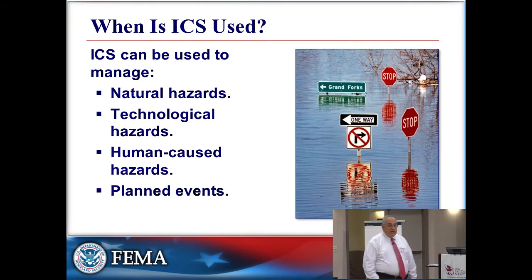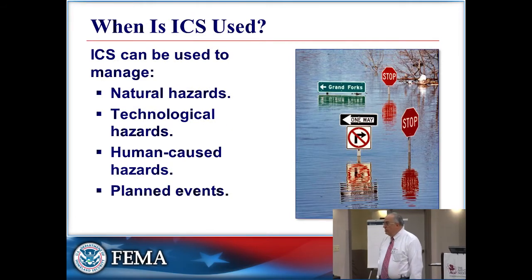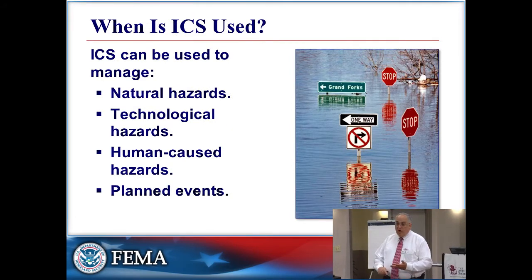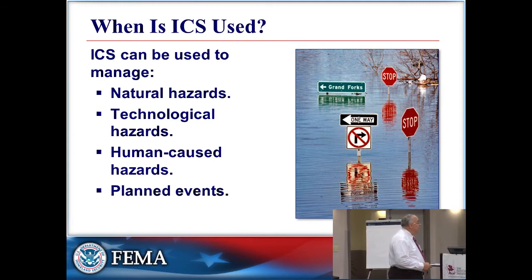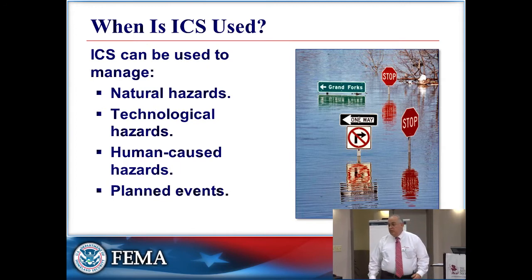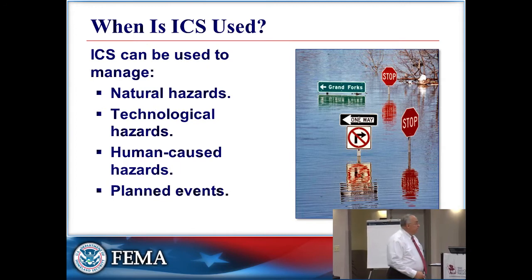ICS can be used for natural hazards — tornadoes, large fires, and things like that. There are all kinds of different hazards. Technological hazards, human-caused hazards, mass shootings, explosions, and things like that. And for planned events, like large events in Chicago — they use an incident command system when setting those up and coordinating them.